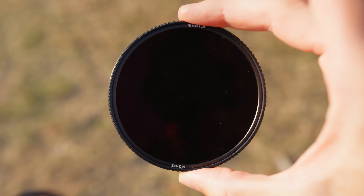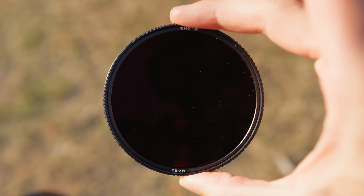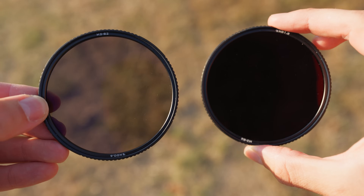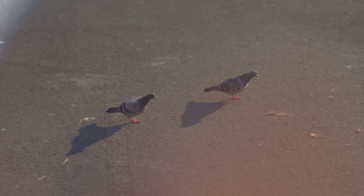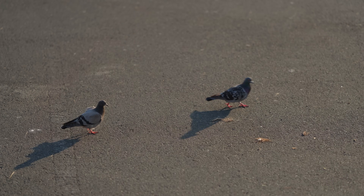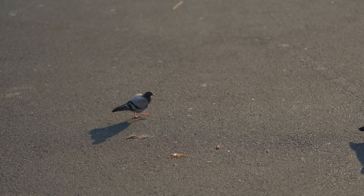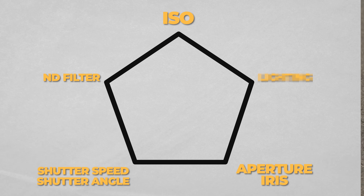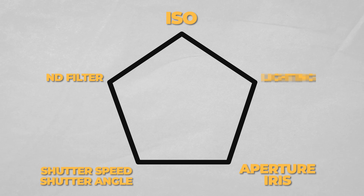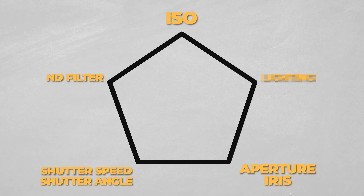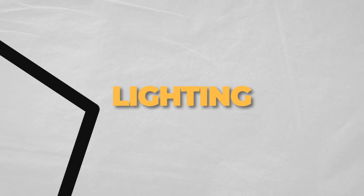ND filters are literally pieces of glass that you put in front of your lens to make things darker going into the camera. People refer to them as sunglasses for your camera, and that's pretty dead on. But they come in all sorts of different strengths and options depending on what you need for your shot.